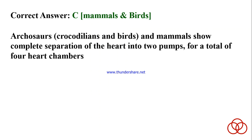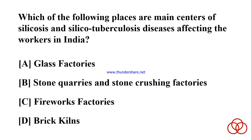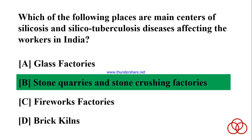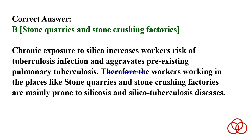Which of the following places are the main centers of silicosis and silica tuberculosis diseases affecting workers in India? A) Glass factories. B) Stone quarries and stone crushing factories. C) Fireworks factories. D) Brick kilns. Correct answer: B. Stone quarries and stone crushing factories. Chronic exposure to silica increases workers' risk of tuberculosis infection and aggravates pre-existing pulmonary tuberculosis, making workers in stone quarries and stone crushing factories mainly prone to these diseases.